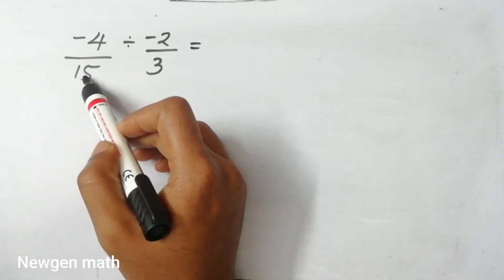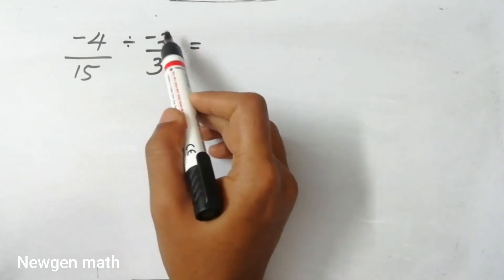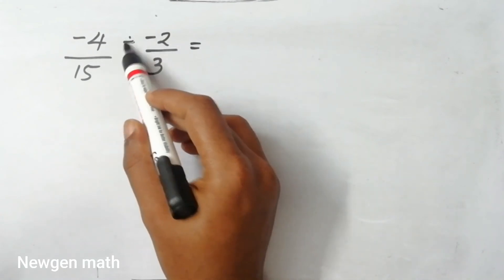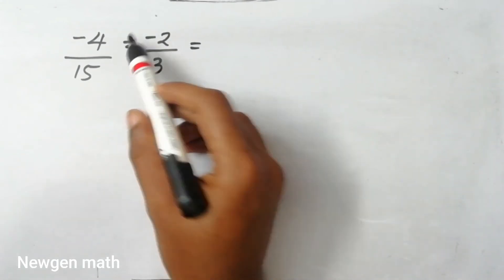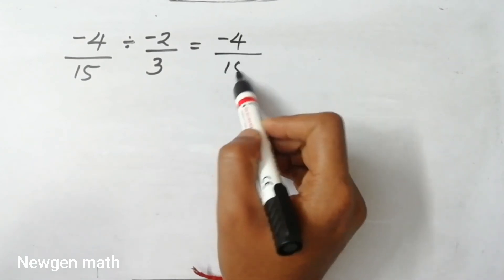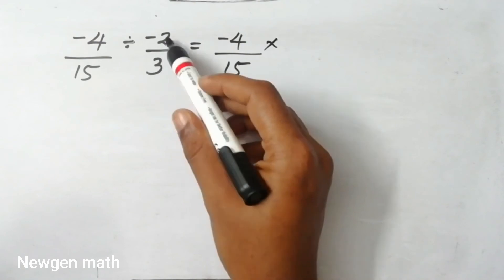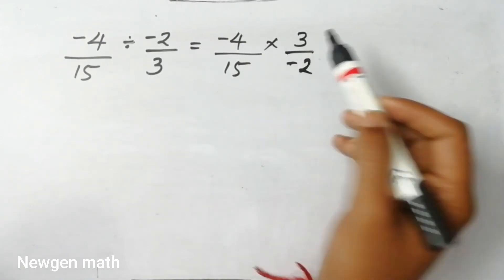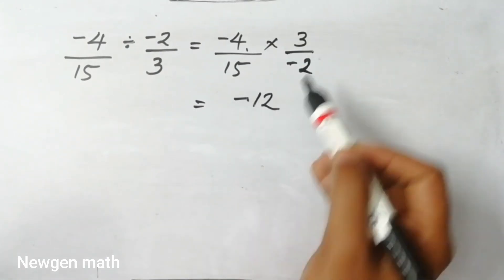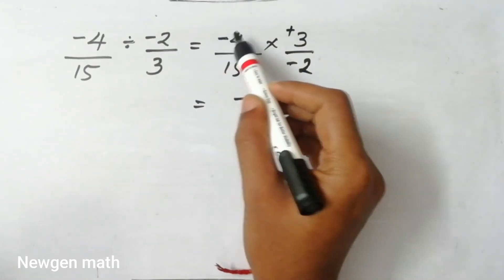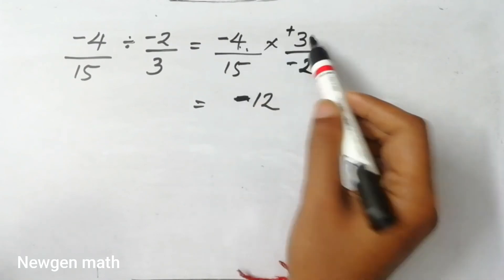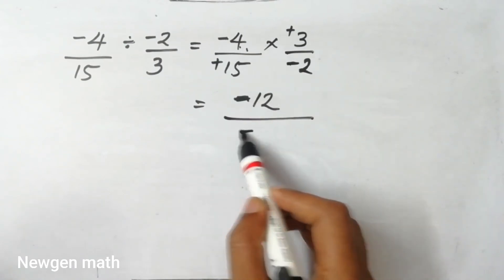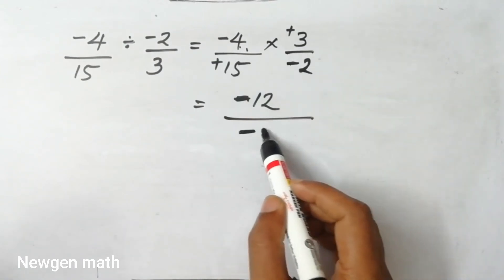The next question is minus 4 divided by 15, divided by minus 2 by 3. For this, I will tell you — this is 3 by minus 2. So minus 4 into 3 is minus 12. This is plus and minus. This is minus two. The answer is minus two: 4, 3, 12. But this is plus 15. This is minus two. If you do this, it is 30. What is the answer? Do you have to do this minus one?